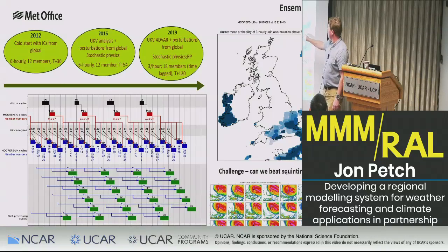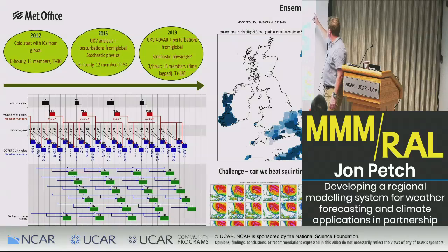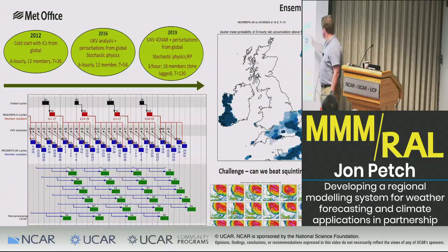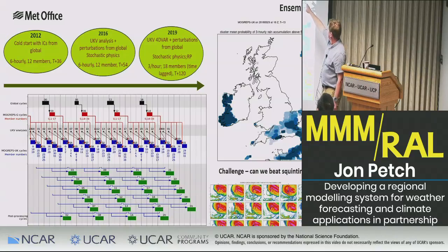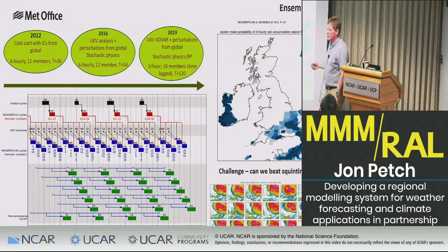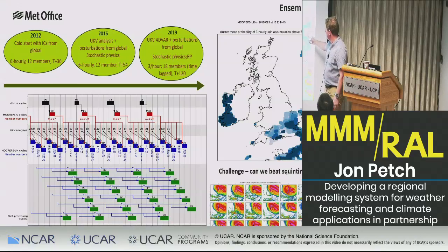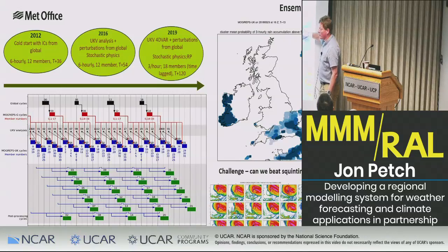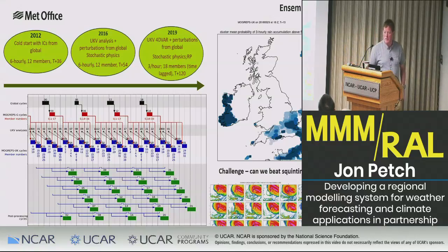For visualising ensemble output, we use what we call paintball plots - sometimes referred to as confetti plots in the US because you have more ensemble members. You can take a threshold important to forecasters - say probability of three-hour rainfall above five millimetres - and the darker the pattern, the more recent the initialisation. So you can see whether you're converging on a solution. It was pretty confident about one area throughout while remaining uncertain about another, and there's more in there that forecasters like.